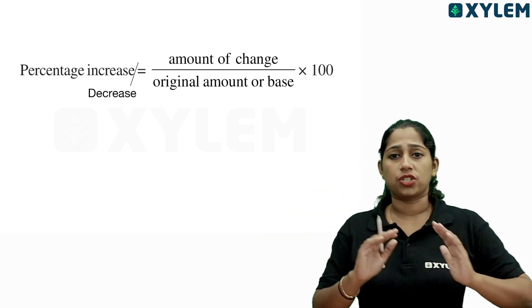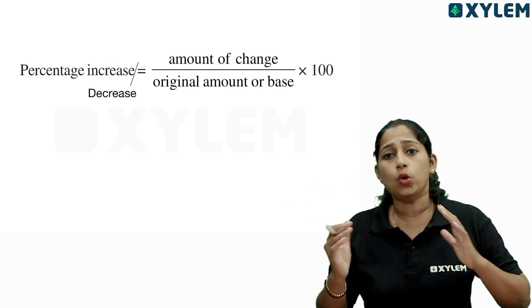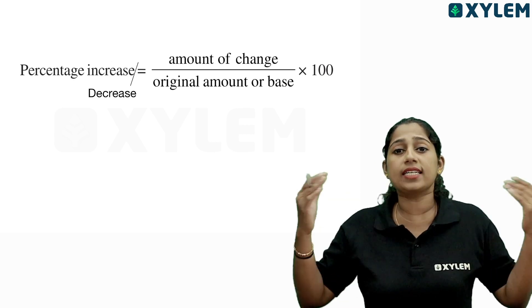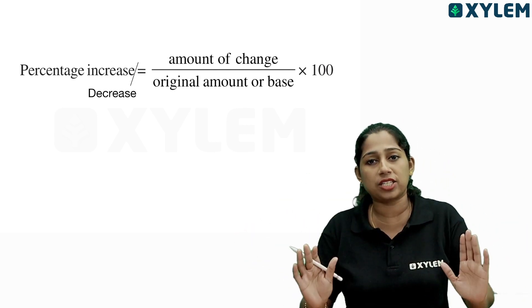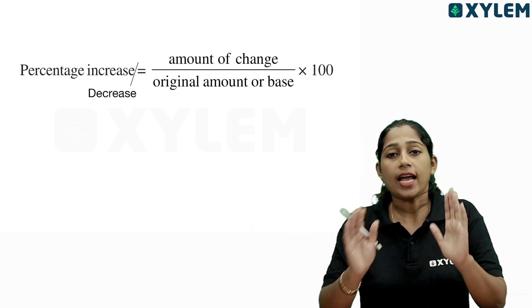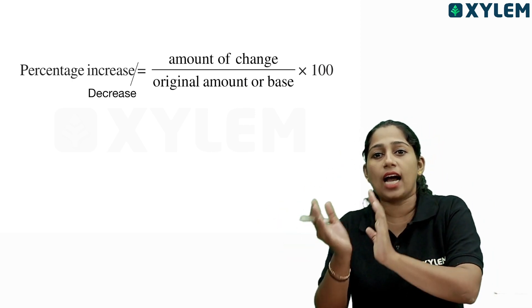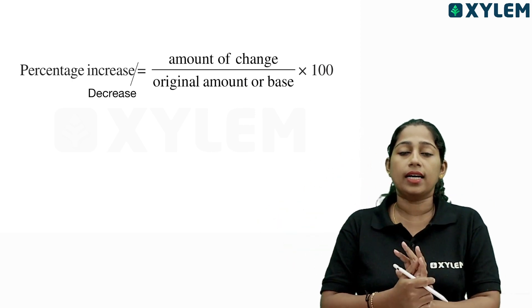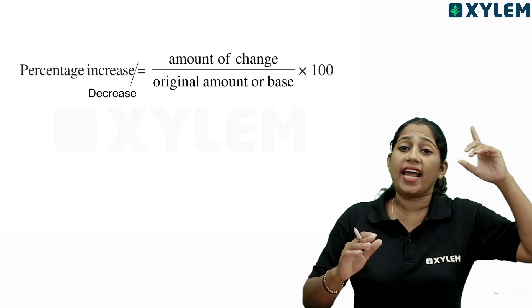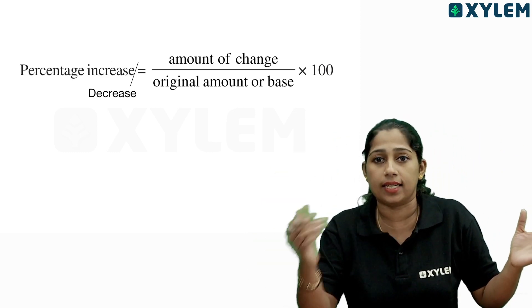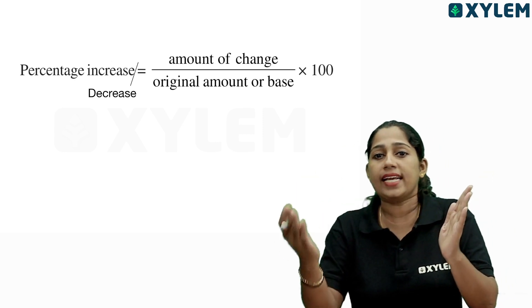So this is the equation: Amount of change divided by the original amount, into 100. This is the equation. For example, 10 is 20.